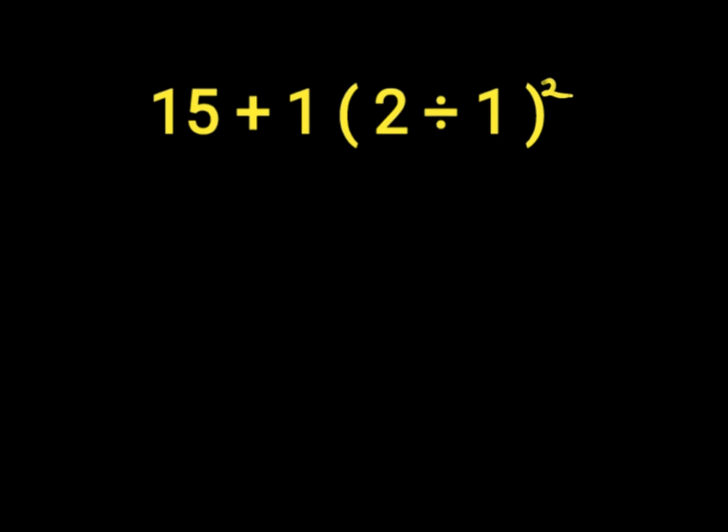First, we have parenthesis: 2 divided by 1, which gives us 2. Then we have 2 to the power of 2. We'll bring down 15 plus 1 times 2 to the power of 2. 2 to the power of 2 equals 2 times 2, which gives us 4. We'll put down our 4 here.